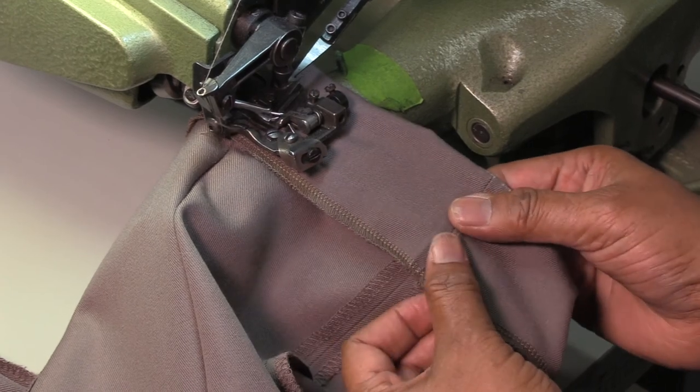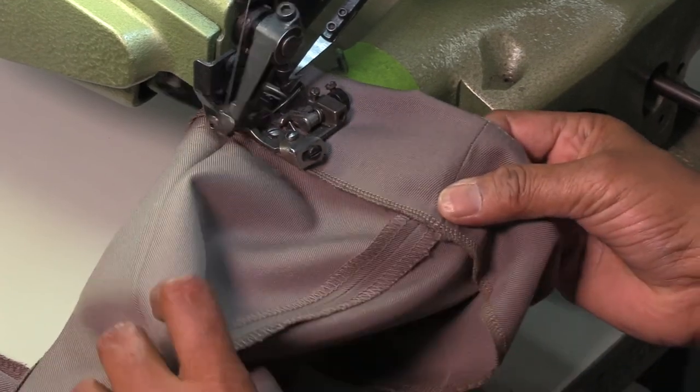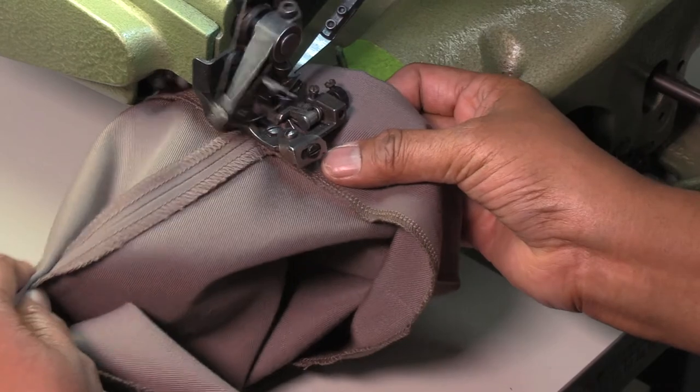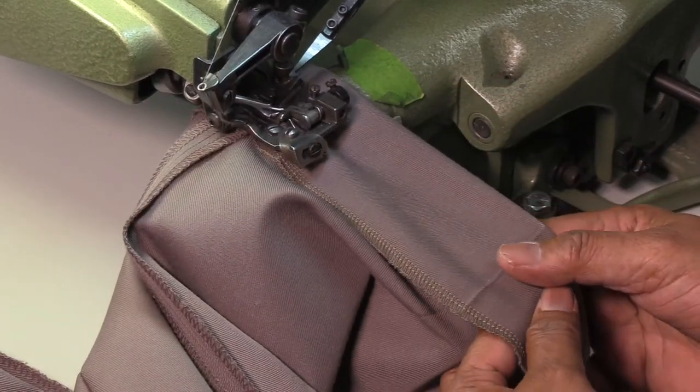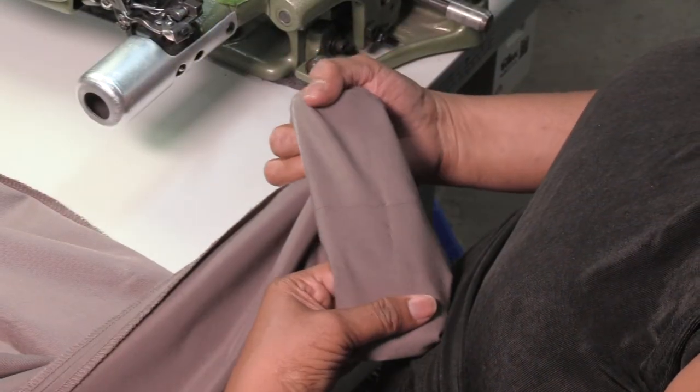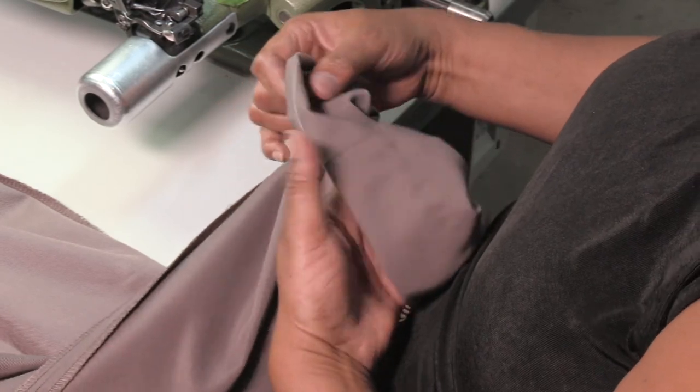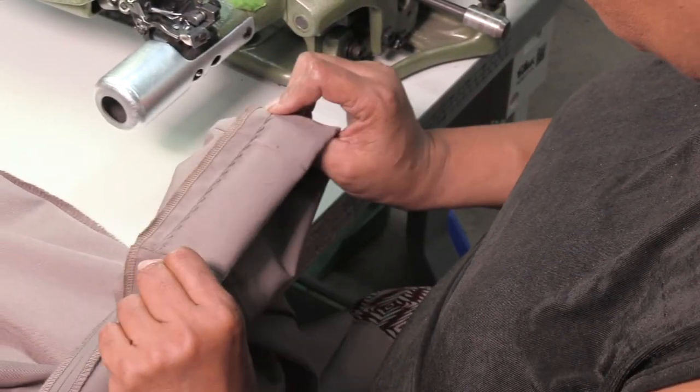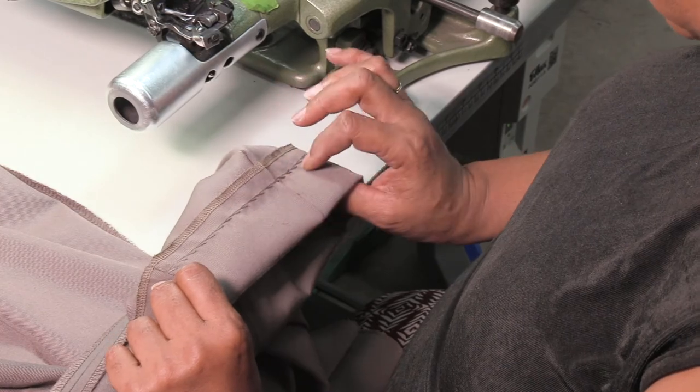Use a blind stitch machine to sew hem in place. Make sure the pickup stitch is enough that it does not fully show on the right side, but it has picked up enough fabric to secure the finished hem.